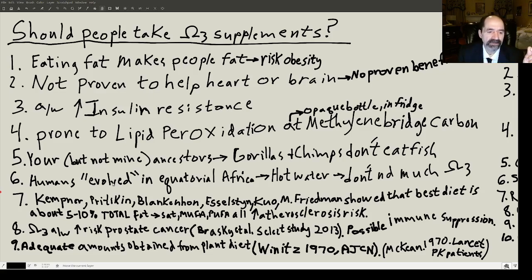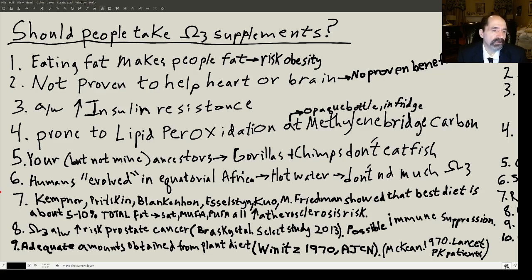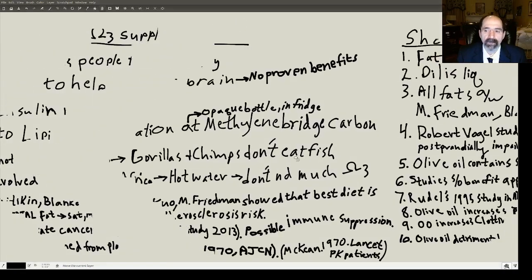Omega-3 fats have been associated with increased risk of prostate cancer — the best reference is Braski et al. from the SELECT study done in 2013. There's also some question about possible immune suppression, especially in mice research. Winitz, in 1971, American Journal of Clinical Nutrition, had patients eating only 0.7% fat for six months and they did just fine. That research was confirmed by McKean in 1970 in Lancet — people can live with incredibly low amounts of fat. People have been put in metabolic wards eating only potatoes for months and come out feeling good, even though that's only 1% or less fat.